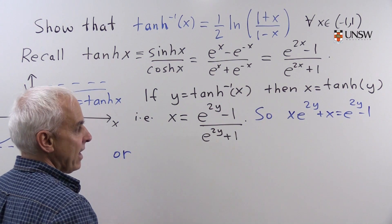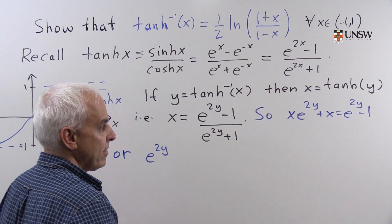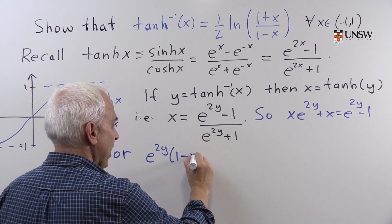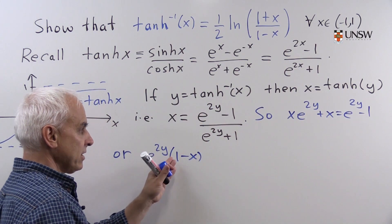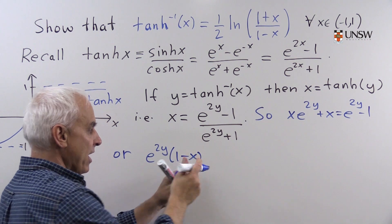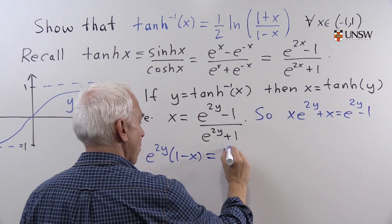And we can rewrite that as e to the 2y times 1 minus x. Bring this term to the other side and combine it with that e to the 2y to get e to the 2y times 1 minus x. And on the other side, we'll have this x and the plus 1, 1 plus x.